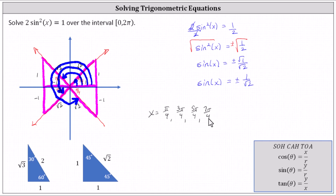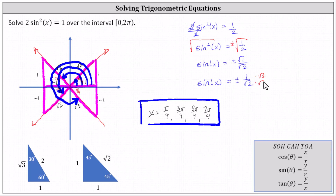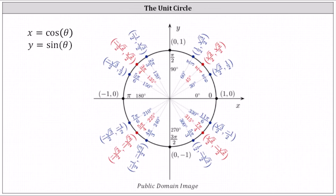These are the four solutions to the given equation over the interval from zero to two pi, closed on zero, open on two pi. Let's also verify these values on the unit circle. To do this, we rationalize one divided by square root two by multiplying the numerator and denominator by the square root of two, giving us sine function values of plus or minus square root two divided by two. On the unit circle, sine theta equals y. In quadrants one and two, the angles pi divided by four and three pi divided by four have a sine value of positive square root two divided by two. In quadrants three and four, five pi divided by four and seven pi divided by four have a sine value of negative square root two divided by two.